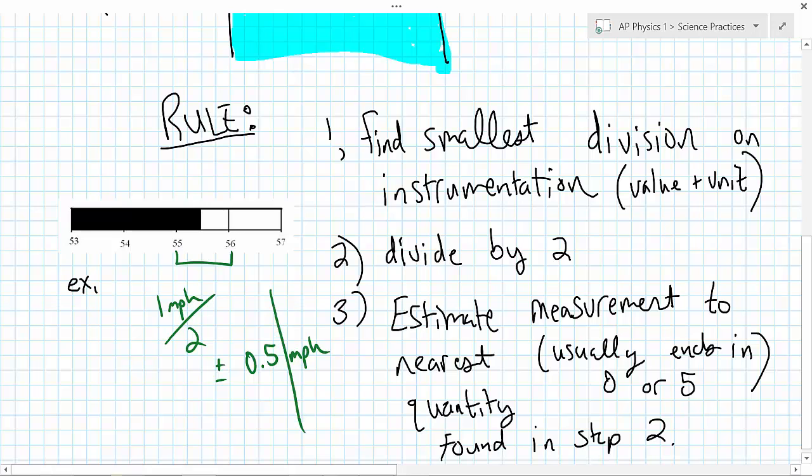And so my answer is going to stop at that decimal place. And so I look at this here, and I'm going to say this looks about 55, and it looks like it's about halfway. So I'm going to say 55.5 miles per hour, plus or minus 0.5.